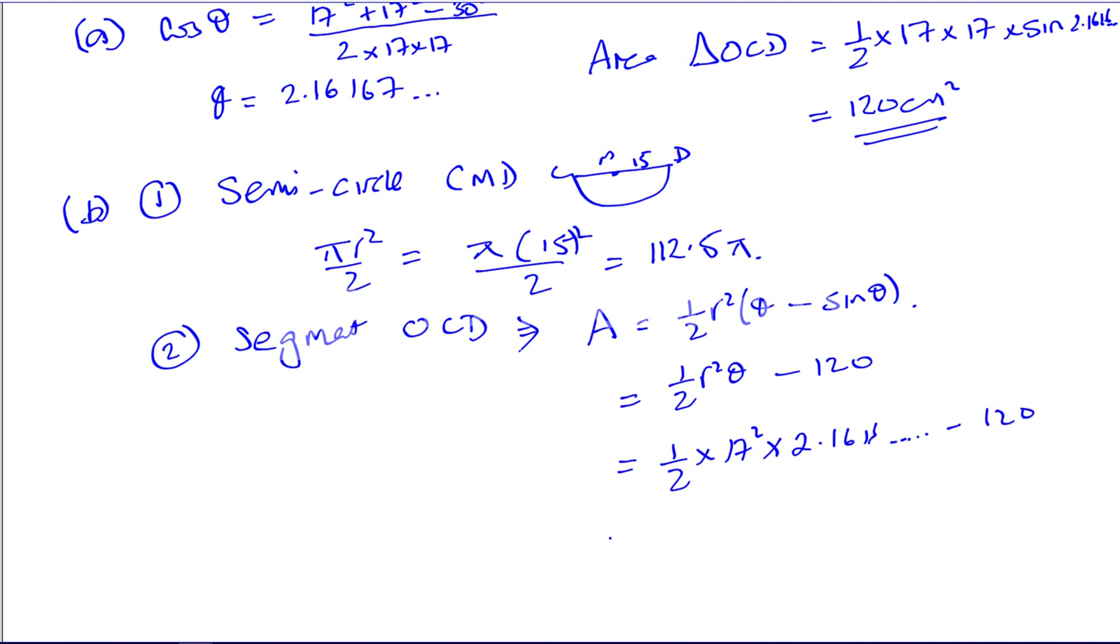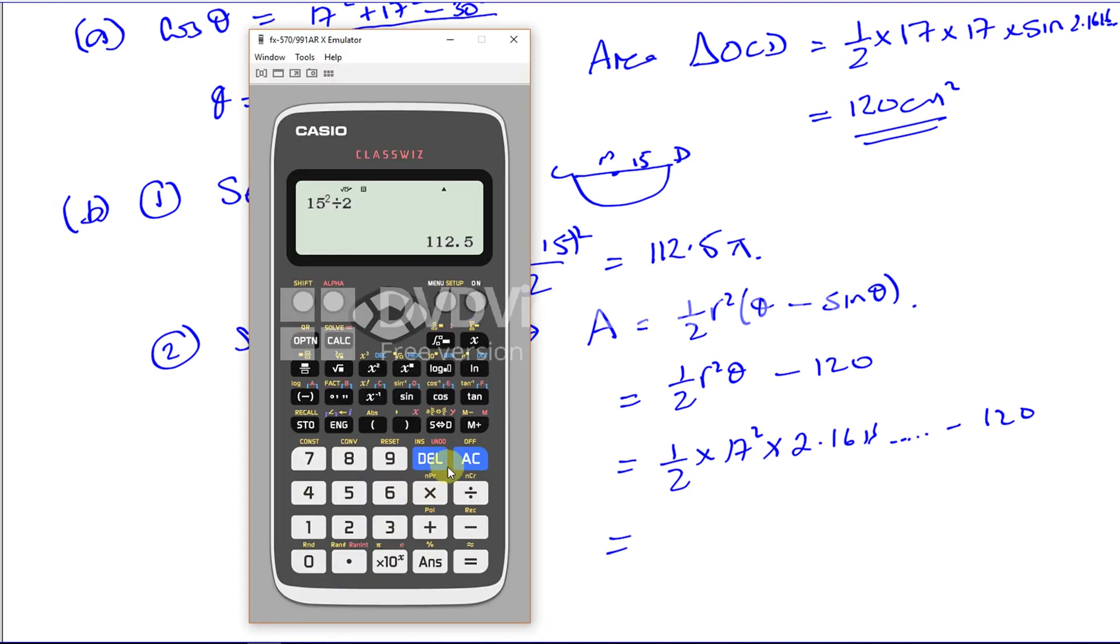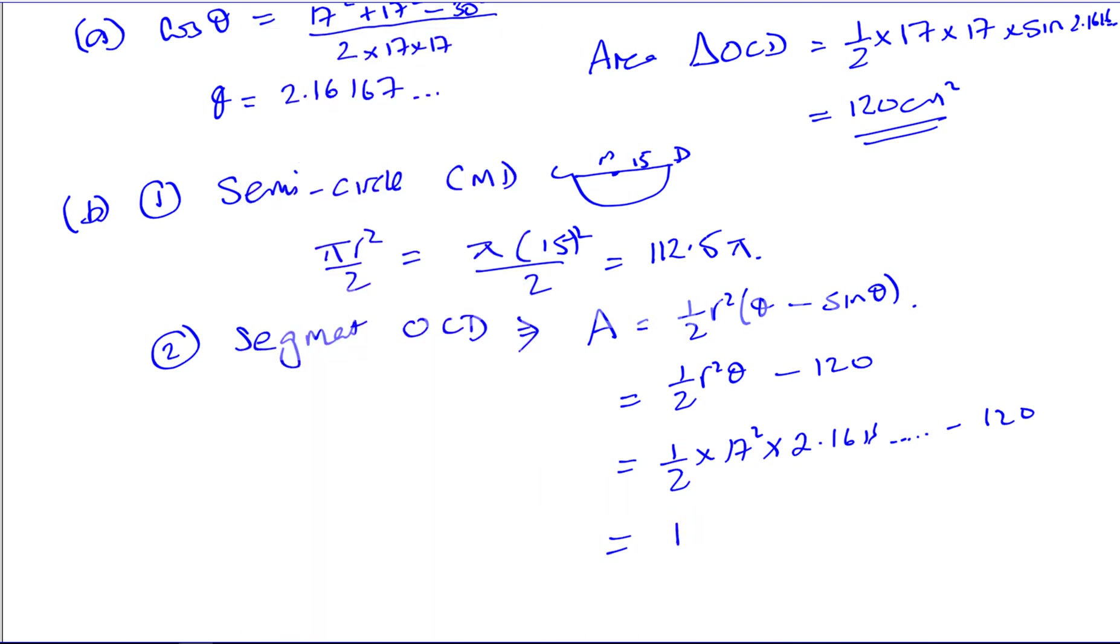So this gives us, we have a half times 17 squared times our answer, which we stored as A. Minus 120, that's 192.362.